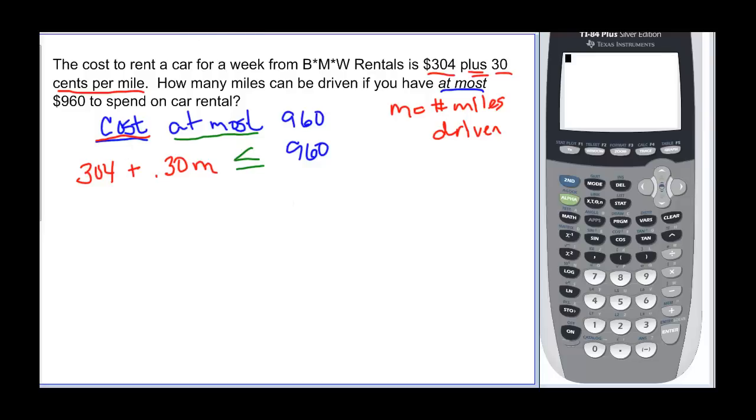To solve it, we're going to subtract 304 from both sides. And I've got my nice little calculator over here so I can let it do all my calculations quicker. So 960 minus 304 is going to be equal to 656. So I now have 0.30m which is less than or equal to that 656.